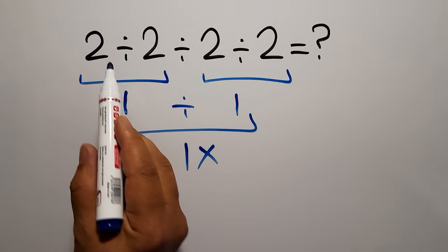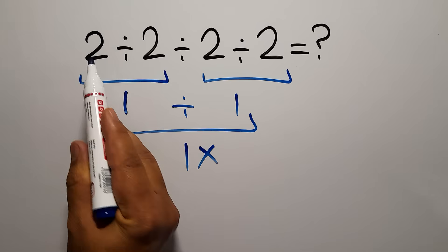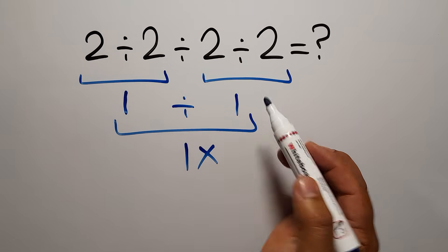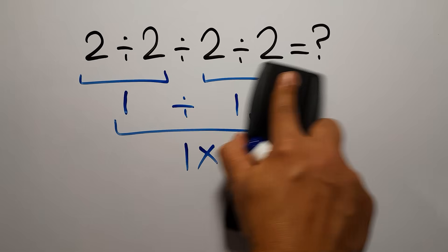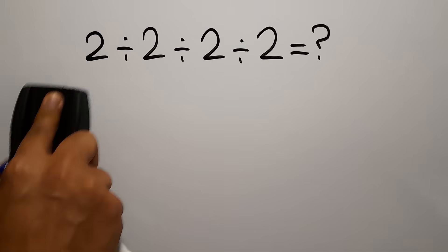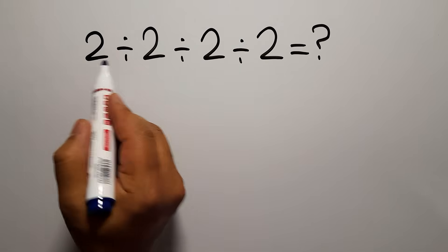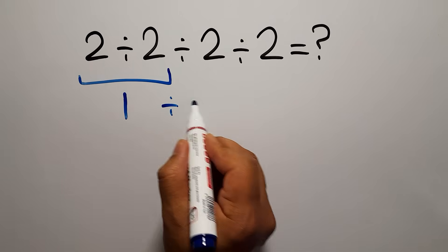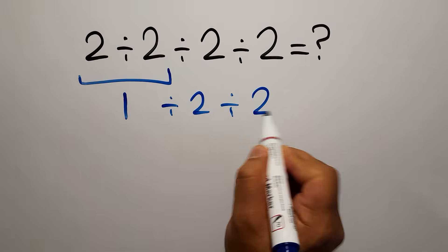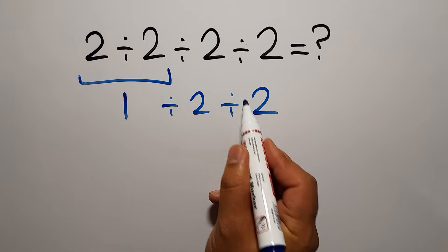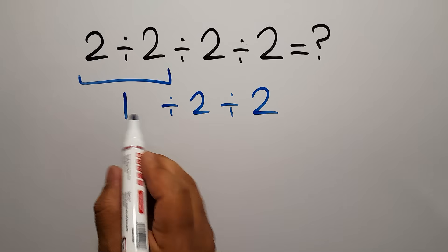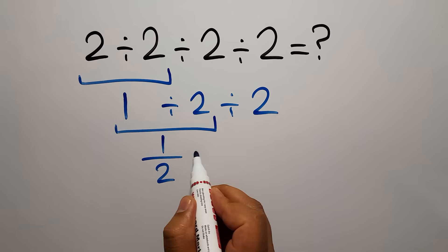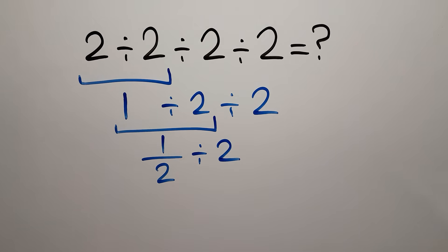So first we do this division, then this division, and finally this division. 2 divided by 2 equals 1, so we have 1 divided by 2, and again divided by 2. We have to do this division first: 1 divided by 2, which we can write as 1 over 2, then divided by 2.